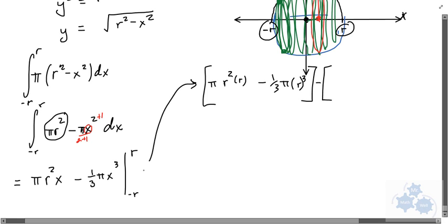So this is going to be pi r squared x. And pi x squared, now we have the variable. We're going to add one to the exponent and divide by that same number. So we're going to have one third pi x cubed. And we're going to evaluate that from negative r to r.